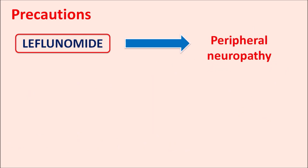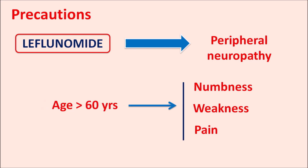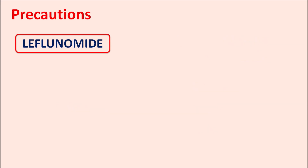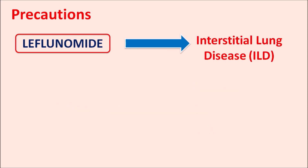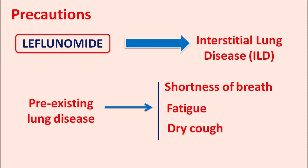Leflunomide can also cause peripheral neuropathy, resulting in numbness, weakness, and pain in patients — particularly in patients aged greater than 60 years. This drug can also increase the risk of interstitial lung disease (ILD), in which patients may experience shortness of breath, dyspnea, difficulty breathing, fatigue, and dry cough. Leflunomide should not be given to such patients, and any pre-existing lung disease can further worsen ILD produced by this drug.